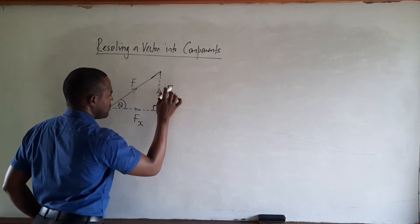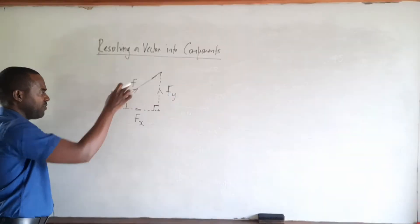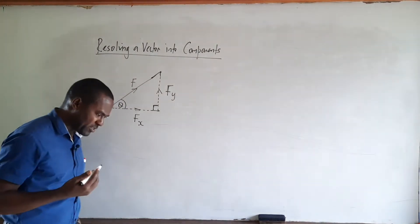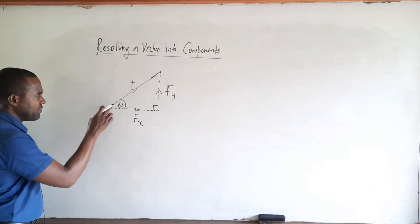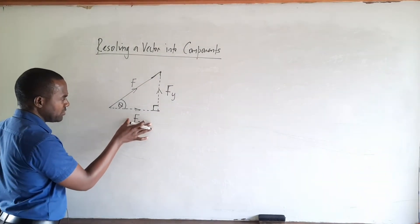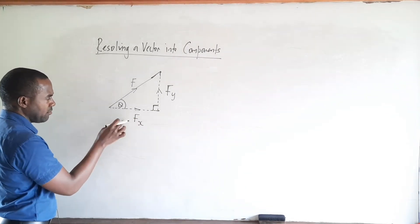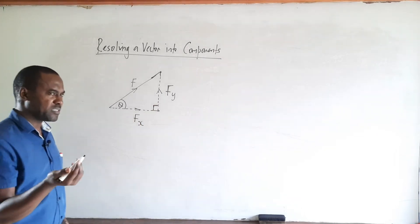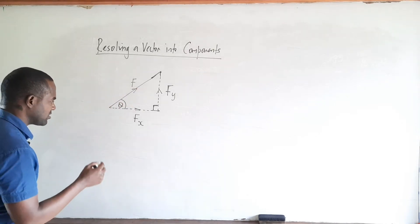What we'll do is express each of these components in terms of the actual force F and the angle theta. To do this, we must consider trig ratios because we're dealing with a right-angled triangle. Since we have angle theta, the horizontal component is the side adjacent to the angle, the vertical component is the side opposite to the angle, and the force itself is the hypotenuse.